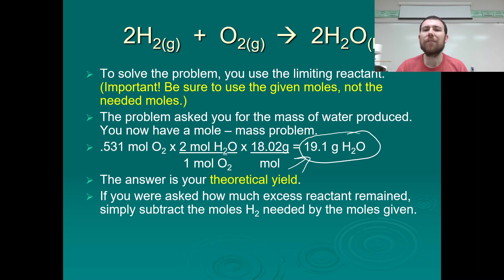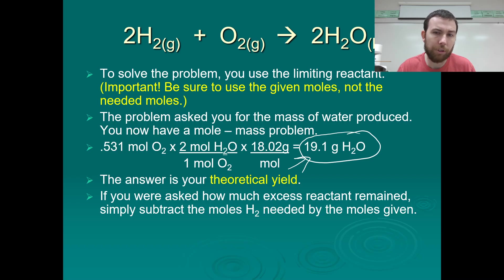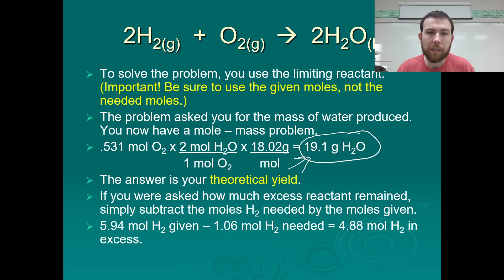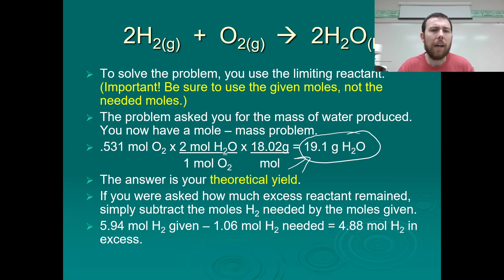If asked how much excess reactant remained: since we know how many moles of hydrogen were needed and how many were given, we simply subtract those two values. We had 5.94 moles of hydrogen given, 1.06 moles of hydrogen were needed, and therefore 4.88 moles of hydrogen are present in excess. If they didn't ask for it in grams, you can leave it in moles.